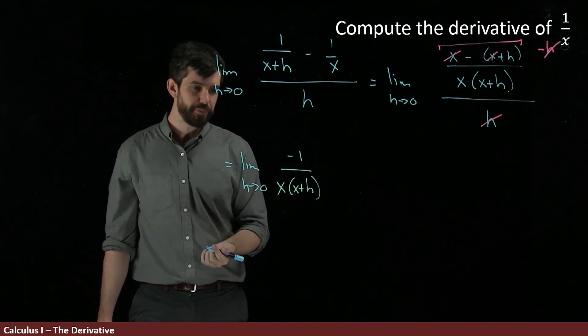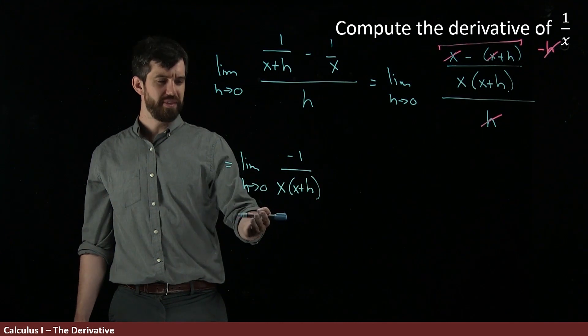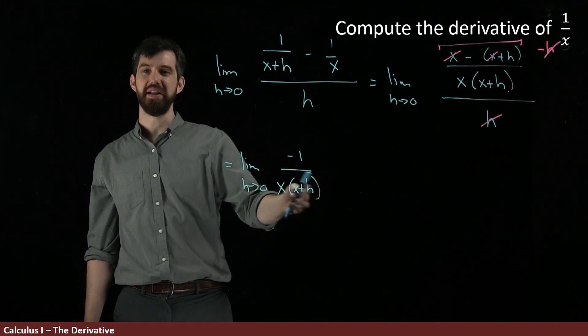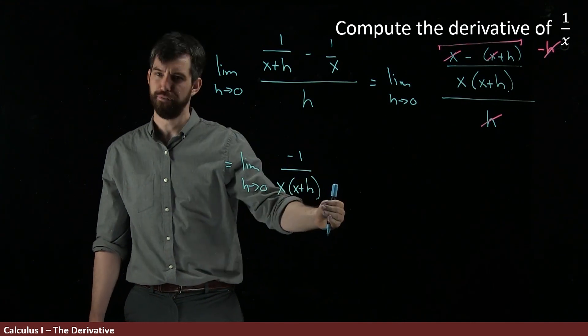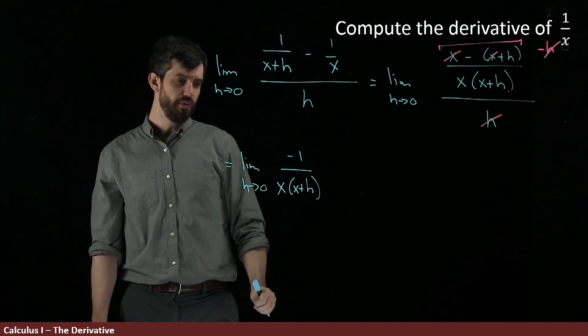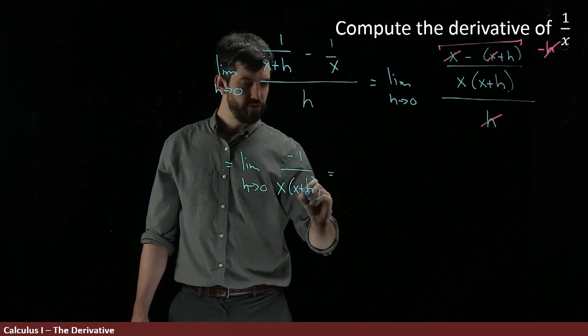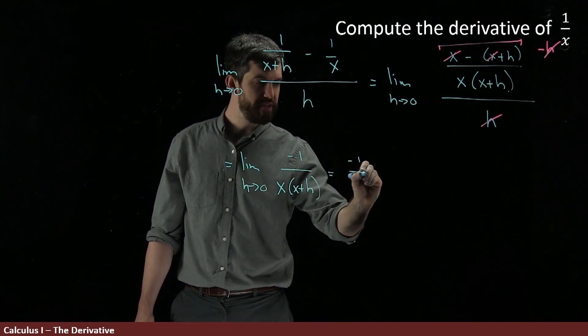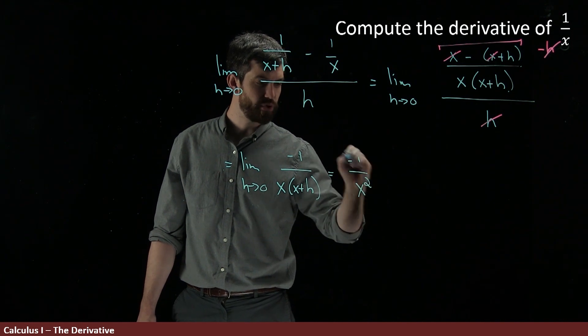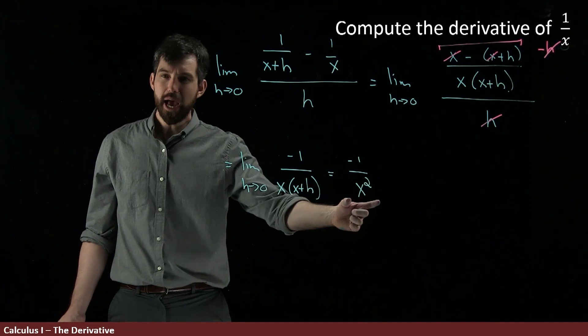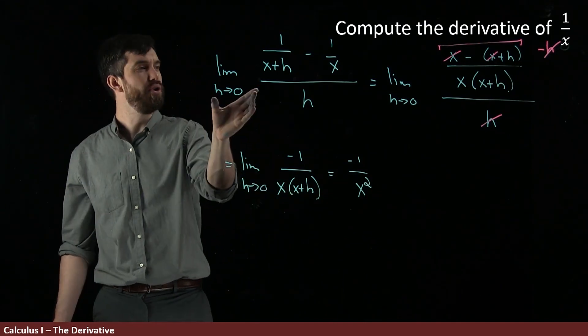But what else can we do? Well, now this is a limit that I think I can evaluate what happens as h goes to zero. I can use my different limit laws. This is a rational function. So I'm just going to set h going to zero right now. And what is this? It's minus one divided out by x squared.